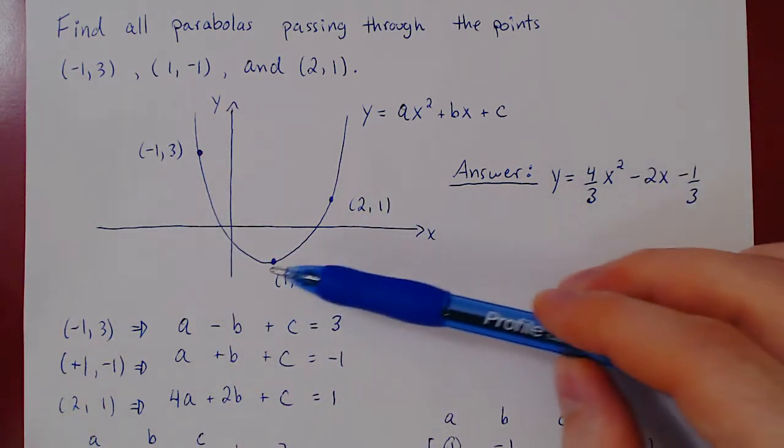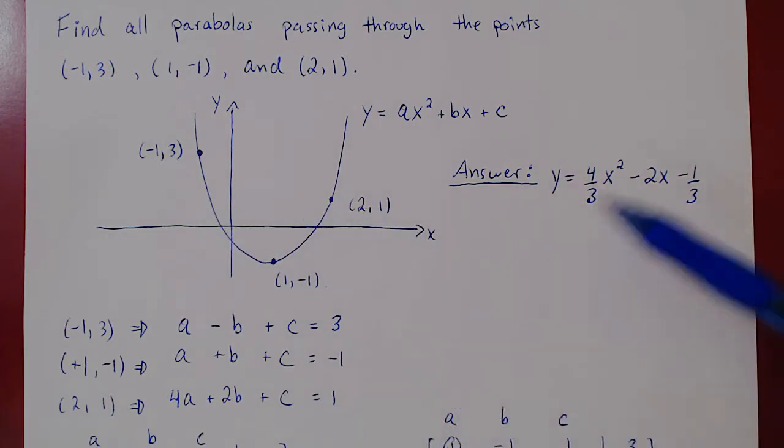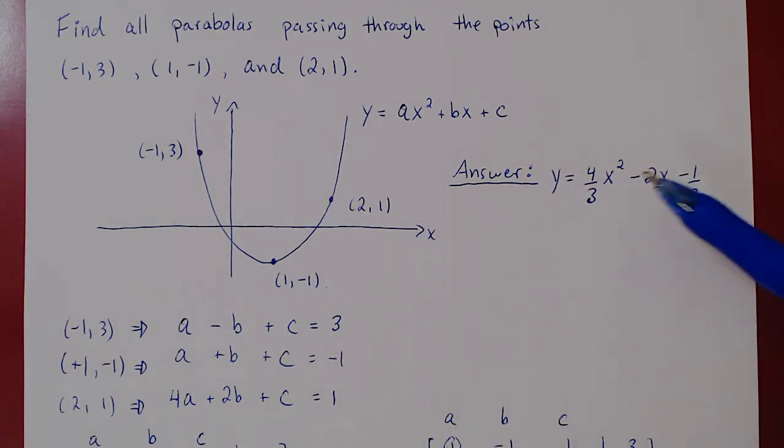And there you have it. This is the equation of the unique parabola that passes through these three points. If we had removed one point, either one of these three, we would have found an infinite number of solutions therefore an infinite number of parabolas and that's it.